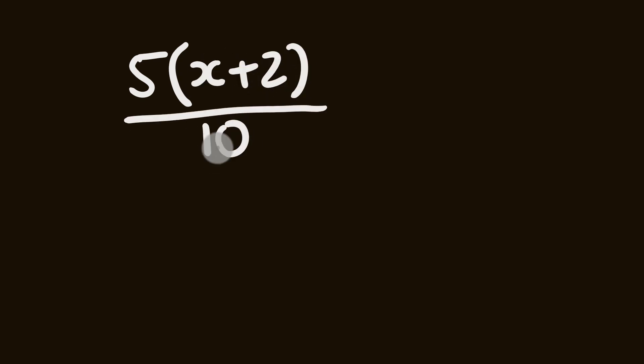So what about we have a look at one last one. Let's have a look at this one here. So the final question. We have 5 and in brackets x plus 2. All of this is going to be then divided by 10 plus 3 is equal to 5.